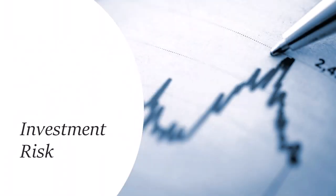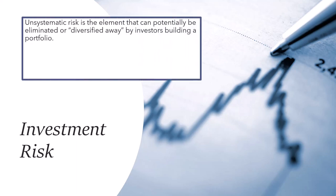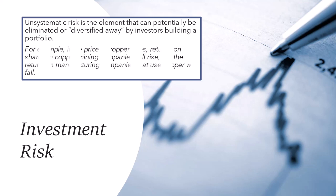Investment risk — the variability of returns on investments — can be split into two elements. Firstly, unsystematic risk is the element that can potentially be eliminated or diversified away by investors building a portfolio. For example, if the price of copper rises, returns on shares in copper mining companies will rise, but the returns in manufacturing companies that use copper will fall.